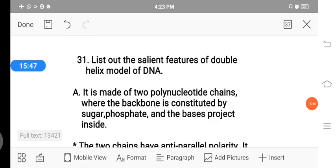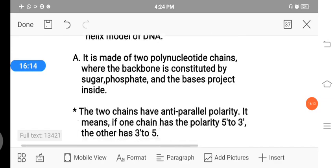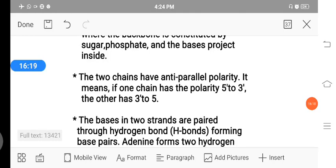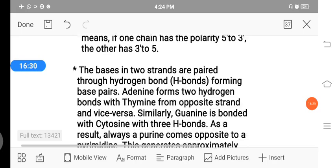The 31st question is, list out the certain features of double helix model of DNA. That is, structure of DNA, Watson-Crick helix model. The first certain feature is, it is made up of two polynucleotide chains. Here, the two polynucleotide chains are separated by three components: one is sugar, second phosphate, third nitrogen bases. Then, the two polynucleotide chains have antiparallel polarity in nature. It means one chain has polarity 5 prime to 3 prime, another is 3 prime to 5 prime.